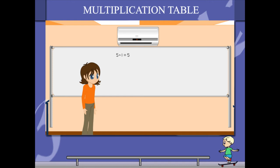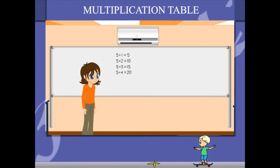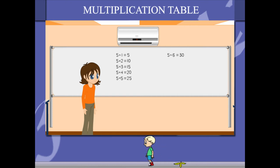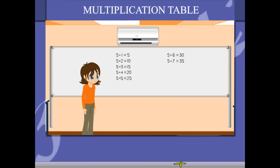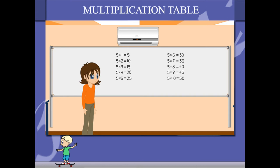5 1's are 5, 5 2's are 10, 5 5's are 25, 5 6's are 30, 5 7's are 35, 5 8's are 40, 5 9's are 45, 5 10's are 50.